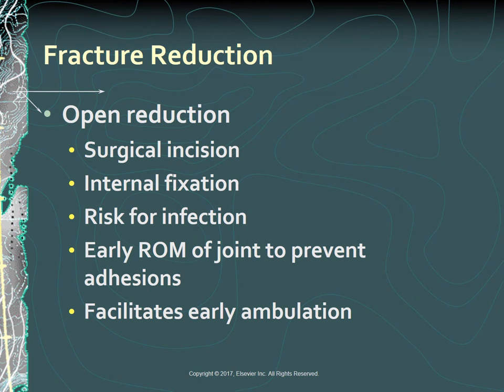An open reduction is the correction of bone alignment through surgical incision. It usually includes internal fixation of the fracture with the use of wire, screws, pins, plates, extramedullary rods, or nails. The main risks of this form of fracture management are infection, complications associated with anesthesia, and the effect of pre-existing medical conditions such as diabetes. ORIF—open reduction internal fixation—facilitates early ambulation, which decreases the risk of complications related to prolonged immobility.